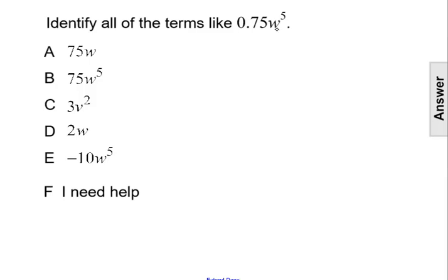So here our term has W to the fifth. So we can automatically eliminate choice C because it has a variable of V and not W. Now we need to check the other terms, and even though they all have the variable W, we have to have that exponent of 5.